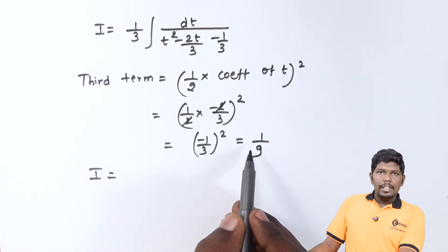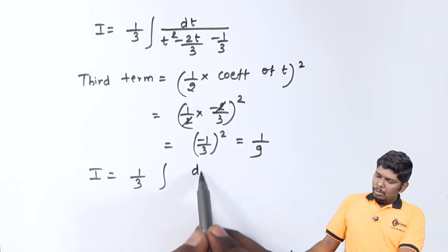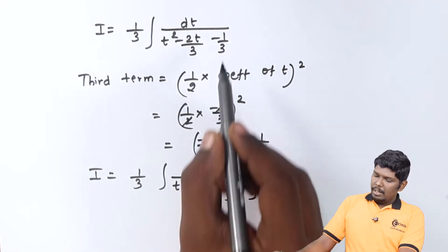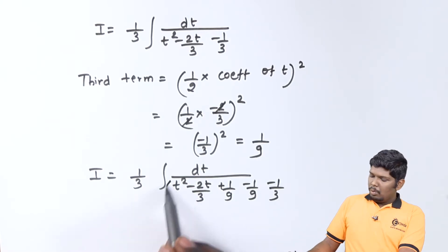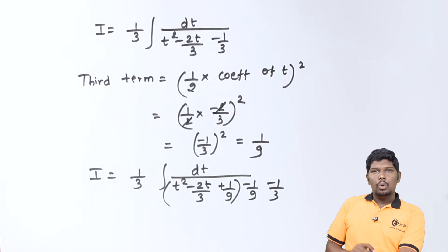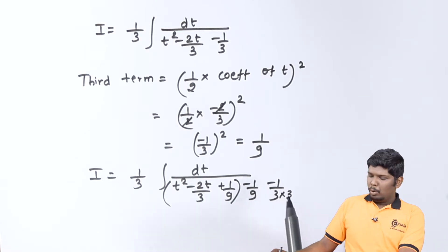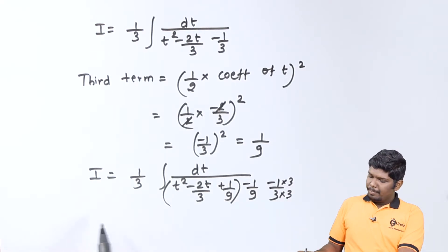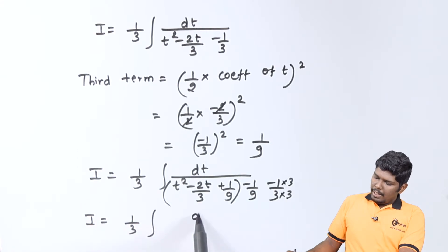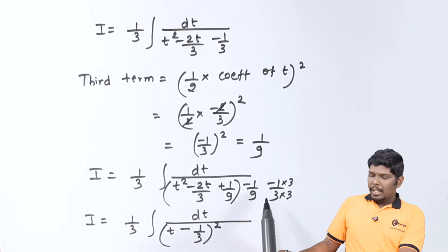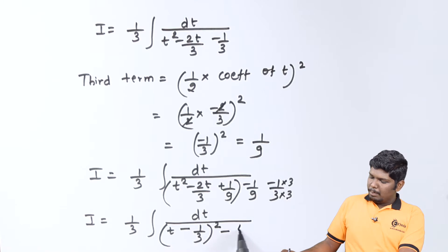Now let us add and subtract this third term in the denominator. That gives t² minus 2t/3 plus 1/9 minus 1/9 minus 1/3. We can reduce the first three terms to (t minus 1/3)², and solving minus 1/9 minus 1/3 with LCM 9 gives minus 4/9. So I equals (1/3) integral dt upon [(t minus 1/3)² minus (2/3)²].